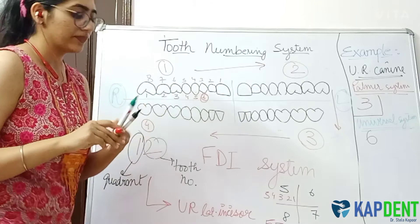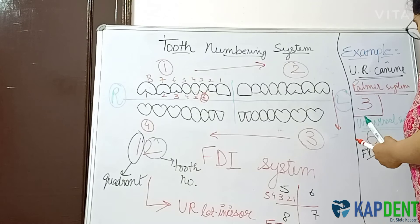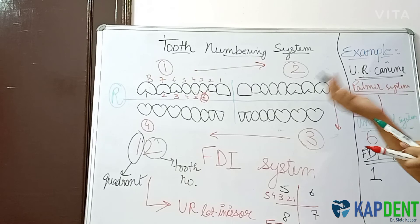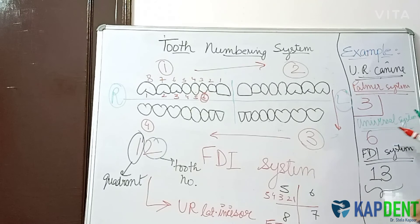The third system is the FDI system, which is a two-digit system. The upper right quadrant is denoted by the number 1, and the canine is the third tooth, just as in the Palmer system. So '1, 3' becomes the notation for the upper right canine in the FDI system. I hope you have understood all three numbering systems. If you have any doubts, you can comment in the section below.